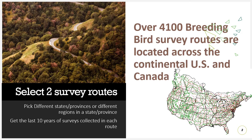You might be looking at Colorado and want a survey in the mountains in the west or in the grasslands in the east, or something in New Jersey on the shore versus North Jersey in the hills or South Jersey in the farmland. Make sure you get two different routes that will be interesting to compare, and get the last 10 years of surveys for each route. There are over 4,100 breeding bird survey routes across the U.S. and Canada, so you should have no trouble finding something.